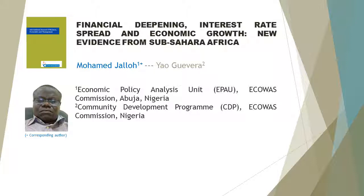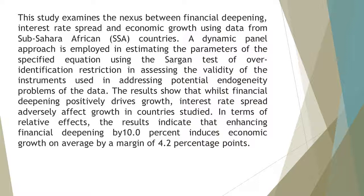This study examines the nexus between financial deepening, interest rate spread and economic growth using data from Sub-Sahara African countries. A dynamic panel approach is employed in estimating the parameters of the specified equation, using the Sargan test of over-identification restriction in assessing the validity of the instruments used in addressing potential endogeneity problems of the data.